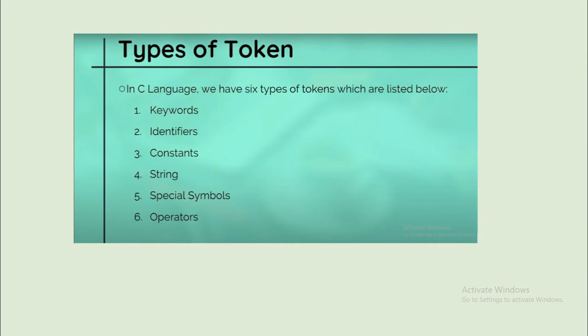Next, we will discuss types of tokens. There are six types of tokens which are listed below: keywords is our main focusing topic today, identifiers, constants, strings, special symbols, and operators, which have more importance whenever you write a program.